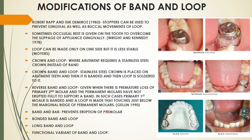Band and loop is commonly tested in viva exams. When a tooth is lost, you must identify whether the loss is unilateral or bilateral. If unilateral, band and loop is used in most cases. However, if the abutment tooth is grossly destructed, crown and loop should be chosen. Keep the modifications in mind to answer appropriately.